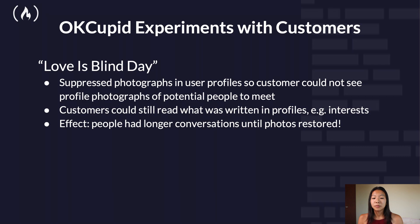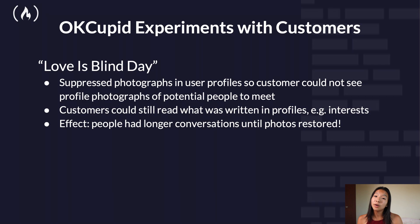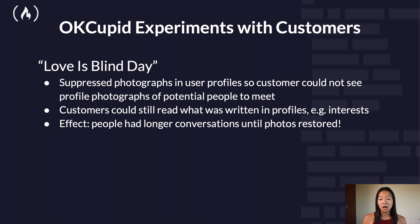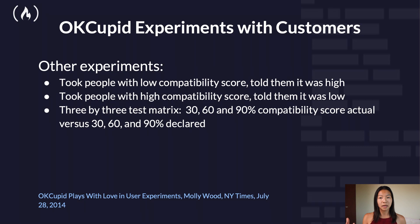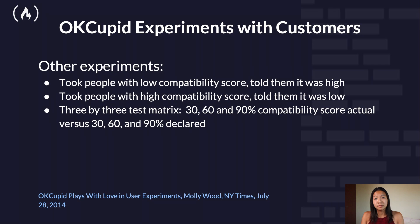Another experiment is this OkCupid experiment with customers. They had a 'love is blind' day where they suppressed photographs in user profiles, so customers could not see profile photographs of potential people to meet. Instead, customers could still read what was written in profiles, such as interests, which had the effect of having longer conversations until these photos were restored. However, they also had some other experiments, such as taking people with a low compatibility score and telling them it was high, or vice versa — a three-by-three test matrix of 30, 60, and 90 compatibility scores, actual versus declared. In this experiment, people felt that they were being deceived.